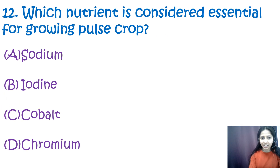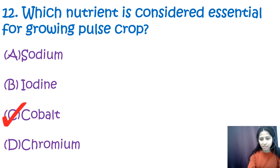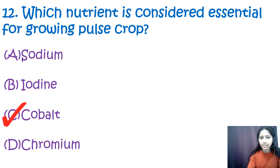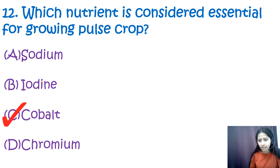Question 12: Which nutrient is considered essential for growing crops? Options are sodium, iodine, cobalt, and chromium. The correct option is C — cobalt. Cobalt is essential for growing crops as it is a key component for nitrogen fixation in leguminous plants, required for the proper functioning of Rhizobium bacteria.